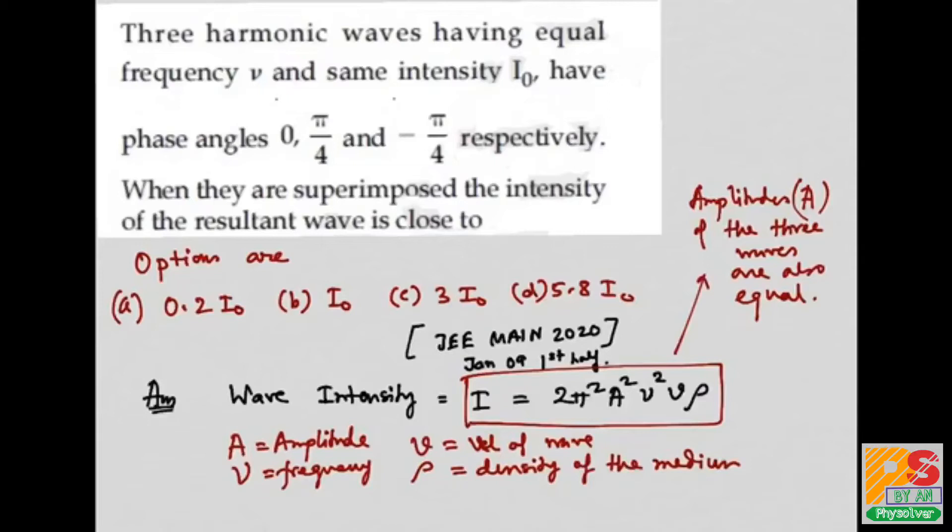Suppose the amplitude of each wave is A. Now given the phase angles are 0, π/4, and -π/4, so we have to use the graphical method in solving this question.